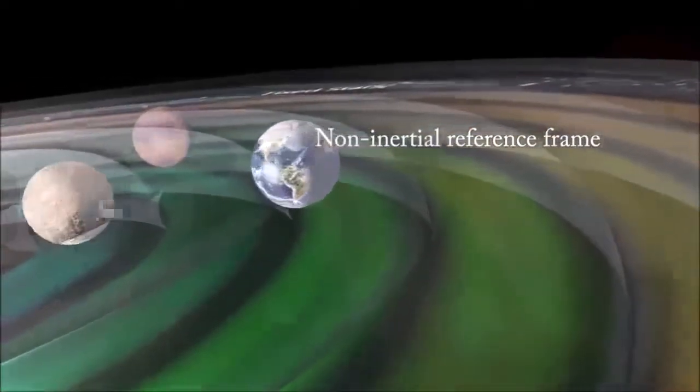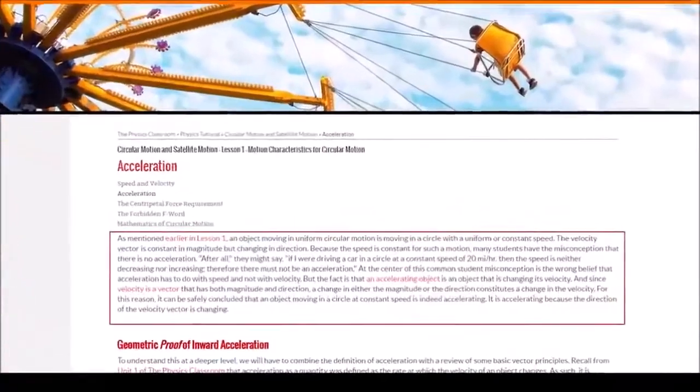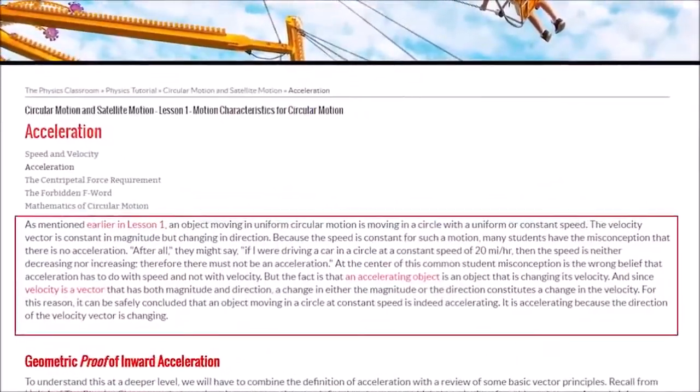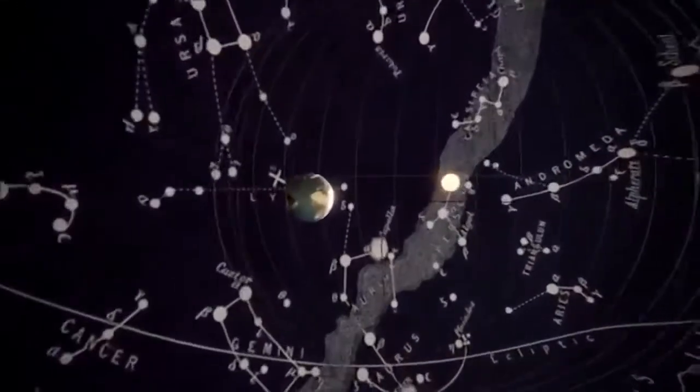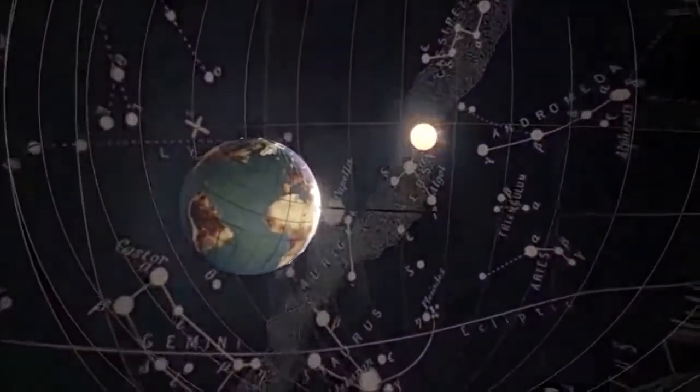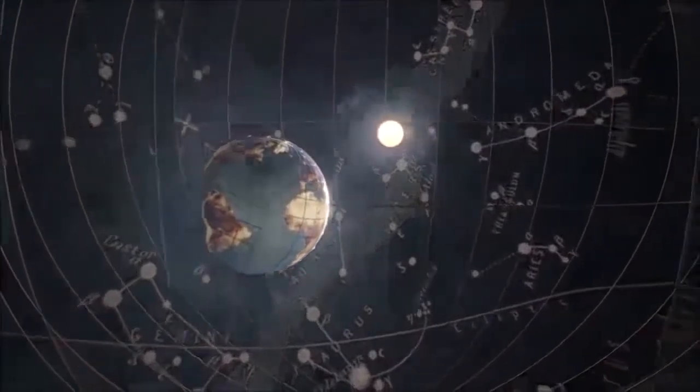In physics, all objects that move in a circle are considered accelerating, even though they go the same speed. As such, one is hampered when doing experiments on earth due to the effects of acceleration on the apparatus.